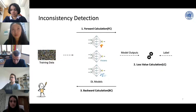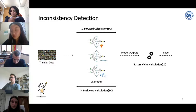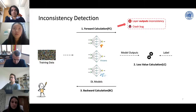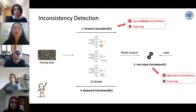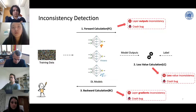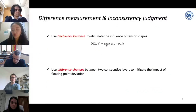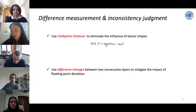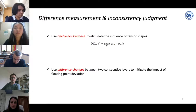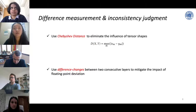In the inconsistency detection part, Muffin partitions model training into three stages. In the forward calculation stage, Muffin detects layer output inconsistency and crash bugs. In the loss calculation stage, Muffin detects loss value inconsistency and crash bugs. In the backward calculation stage, Muffin detects gradient inconsistency. To accurately detect inconsistency, we use the Chebyshev distance to eliminate the influence of tensor shapes, and use the difference changes between two consecutive layers to mitigate the impact of normal effects such as floating point deviation.